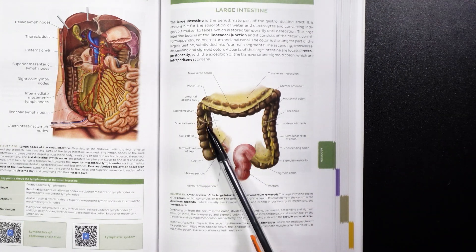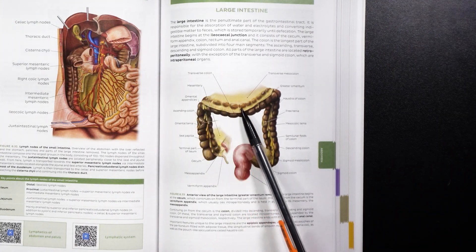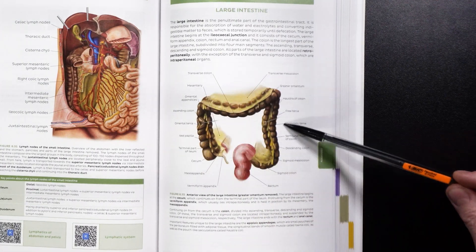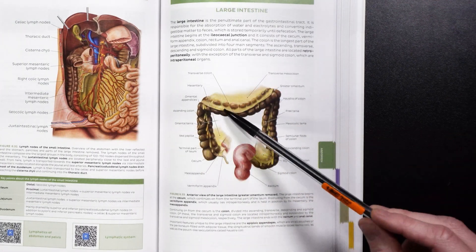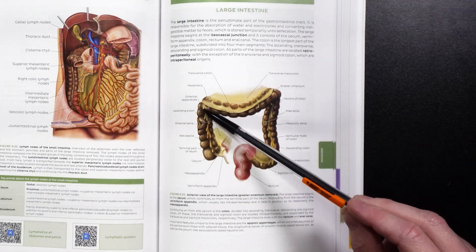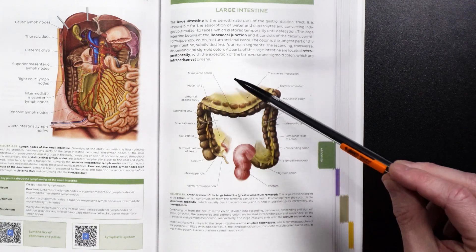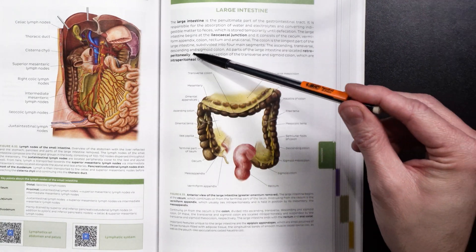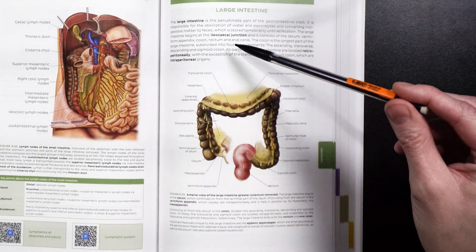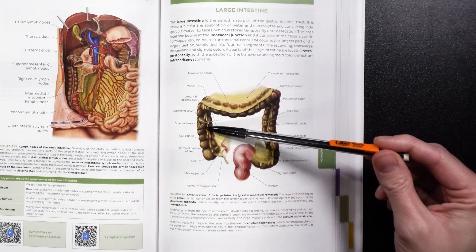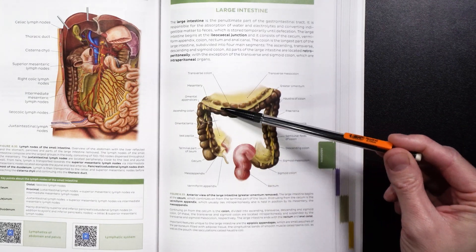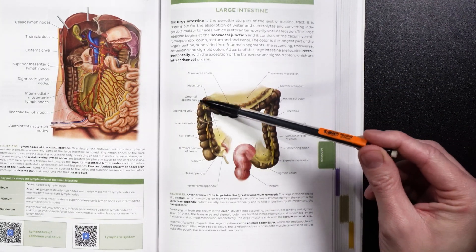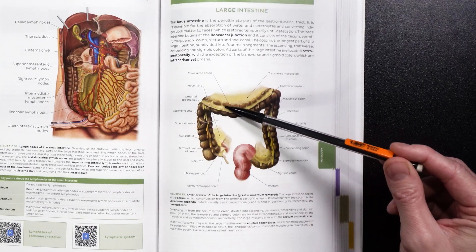So we're going from the cecum, then up the ascending colon, and then we make this turn. This turn is what we call the hepatic flexure. Hepatic is in reference to the liver, which would be right here — this massive organ. So where we are turning into the transverse colon, we call that the hepatic flexure.